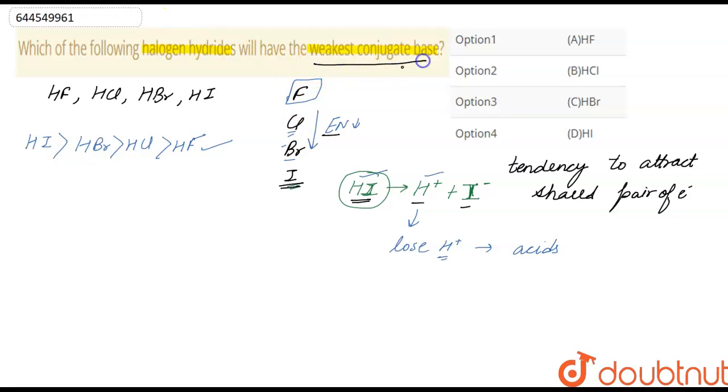Now we have to find out the weakest conjugate base. The strongest acid will have the weakest conjugate base, and weakest acids will have strongest conjugate base.